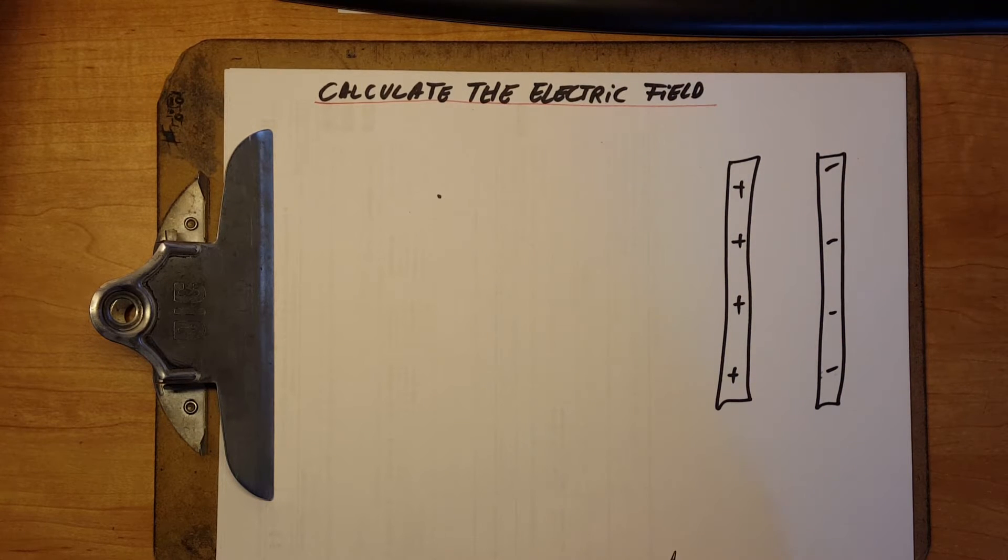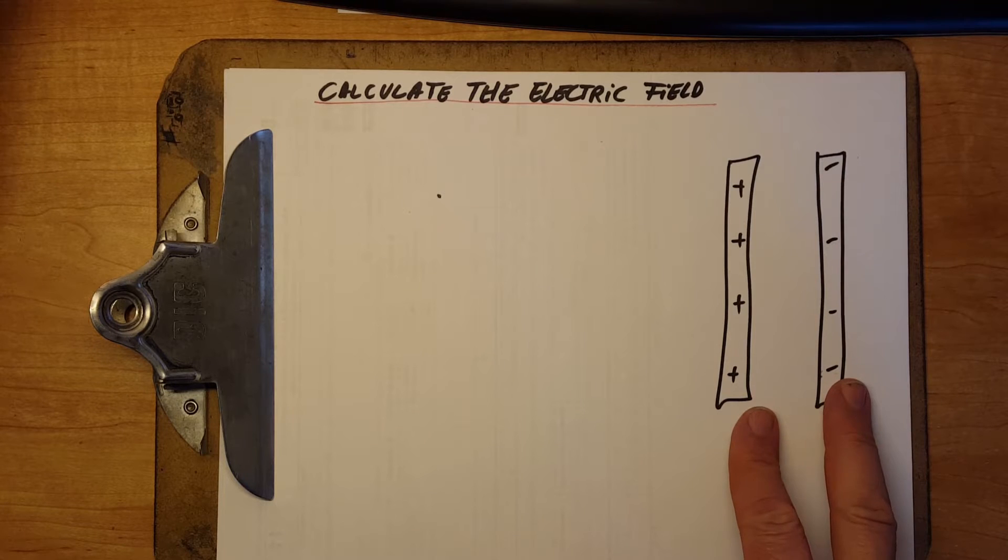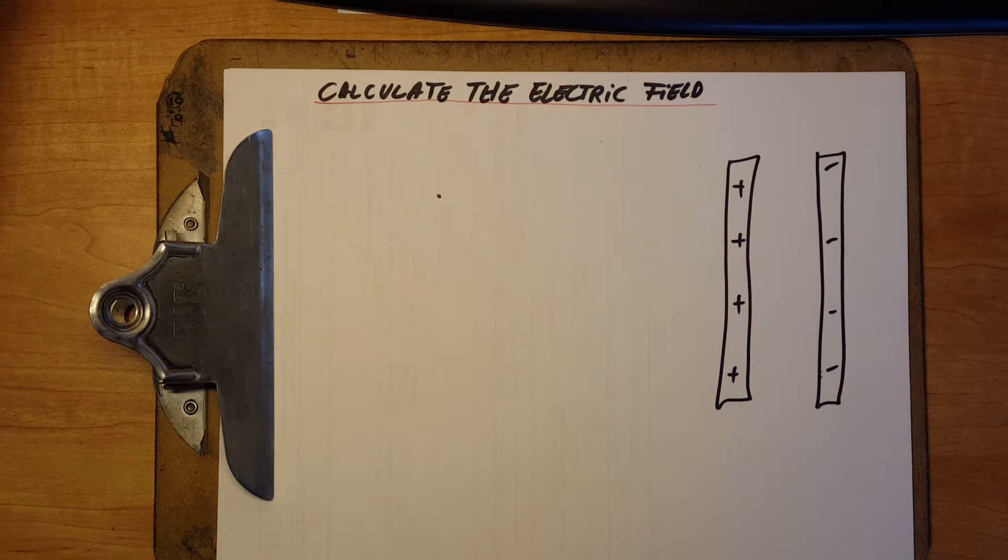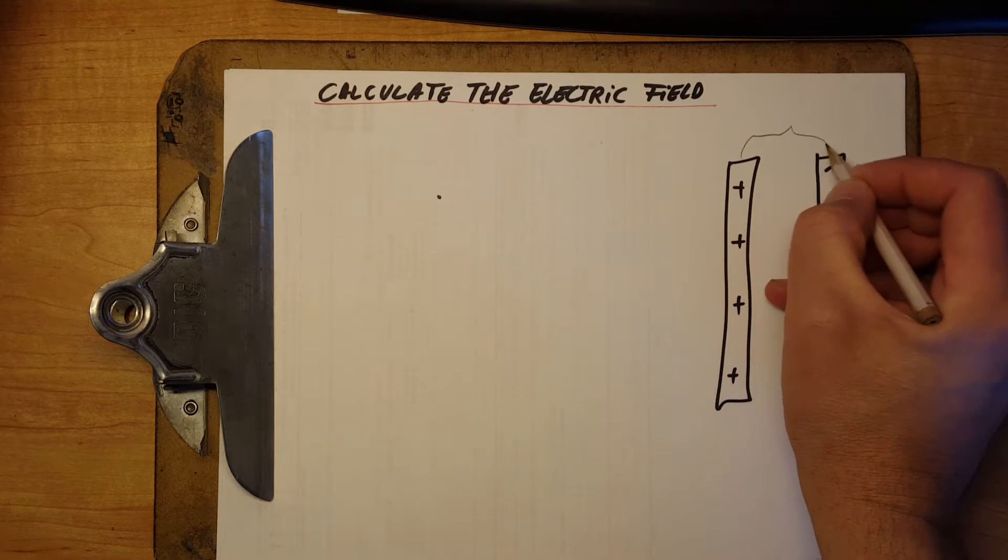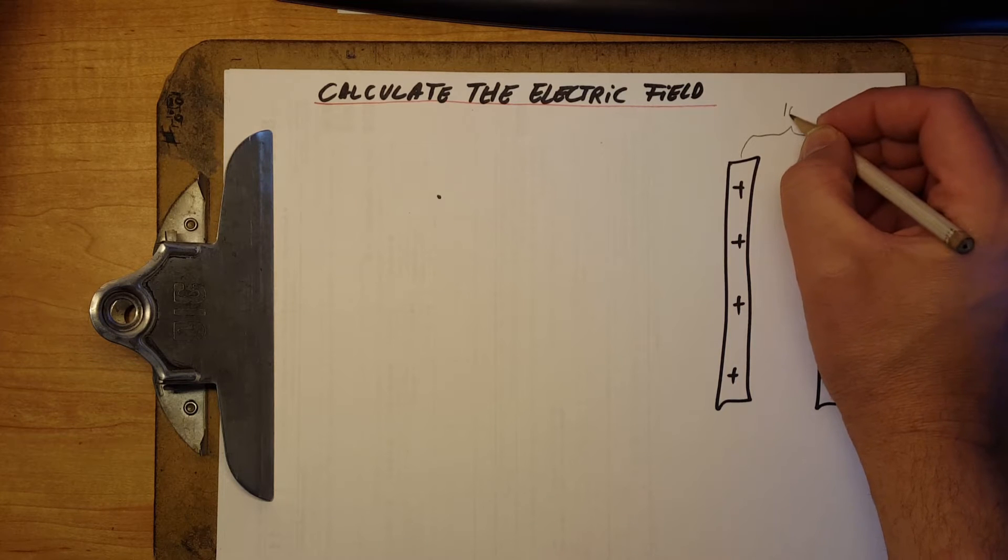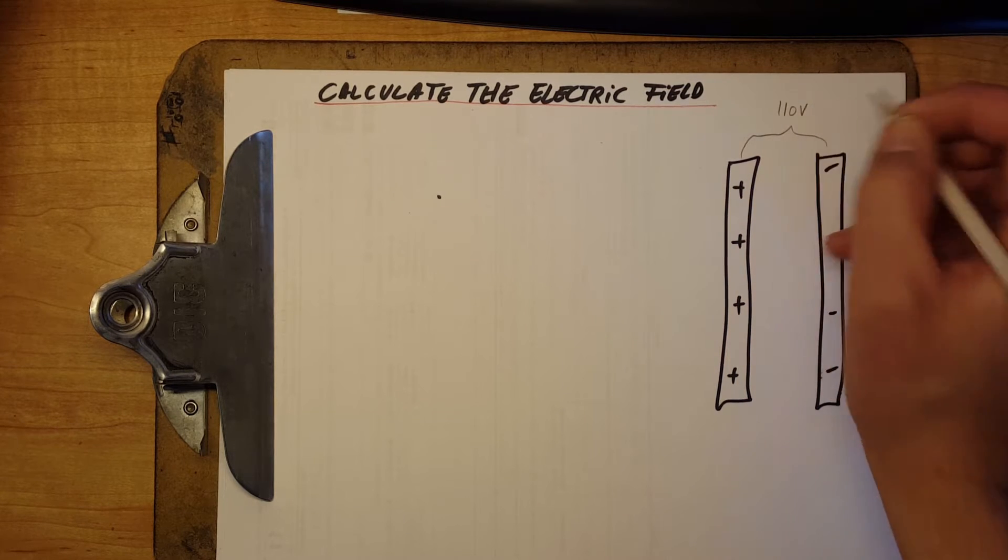The problem says that we have two parallel plates that we will charge to produce a voltage of 110 volts between them. This will be our potential difference between them. 110 volts.